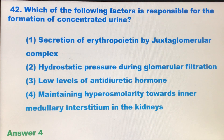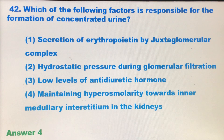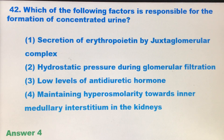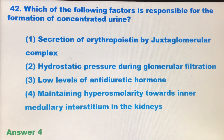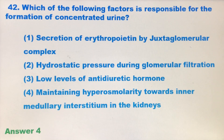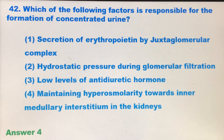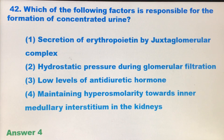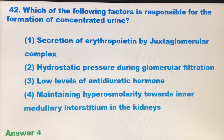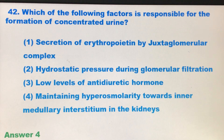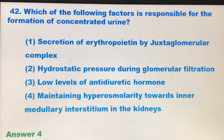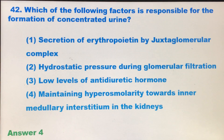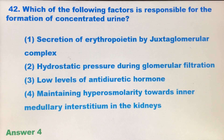Now, how does osmolarity help in forming concentrated urine? The hyperosmolarity maintained in the inner medullary interstitium is due to two main things: Henle's loop and the vasa recta. In both Henle's loop and the vasa recta, the flow of the filtrate and the blood are in opposite directions, thereby creating a counter-current mechanism.